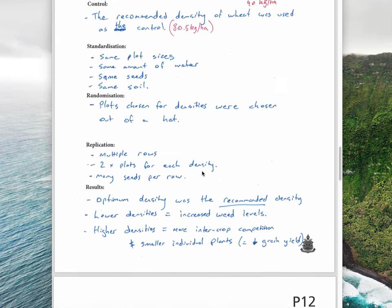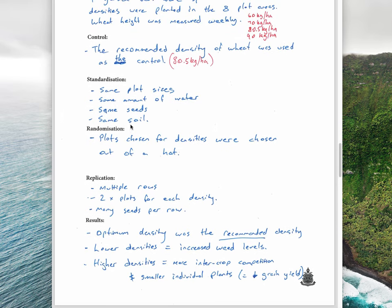How did we make this a good fair experiment? We need to think about control, standardization, randomization, and replication. The control was the recommended density of wheat, 80.5 kilos per hectare - the recommended best density that has been found for wheat. We tested all the other ones against that to see if they were any better in our situation.